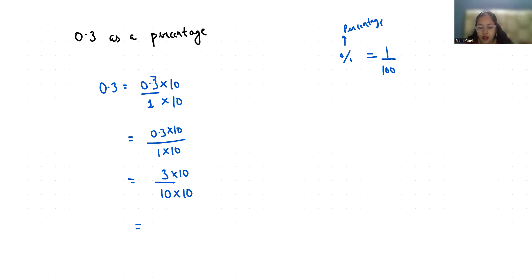30 by 100 we can write as 30 times 1 by 100, and 1 by 100 means percentage, so it is 30 percent. So 0.3 in terms of percentage is 30 percent. I hope it's clear and you find it useful.